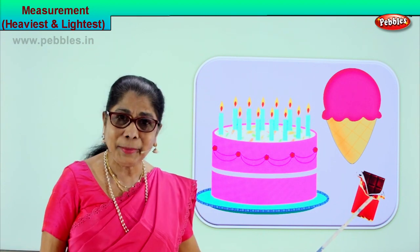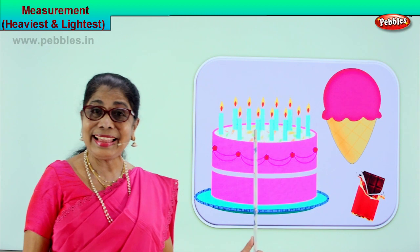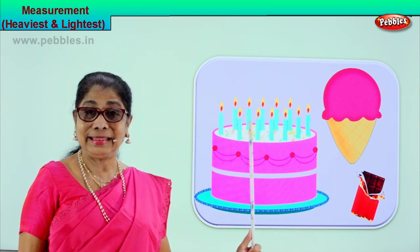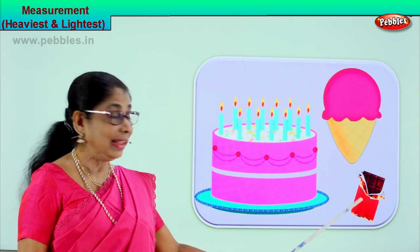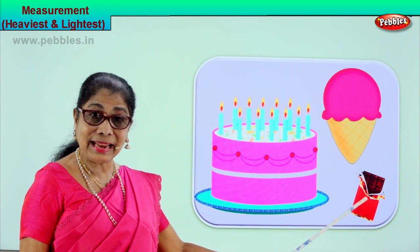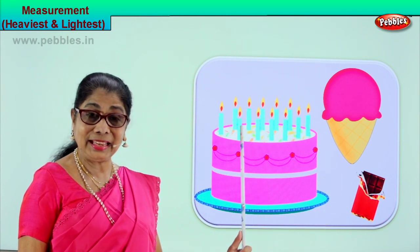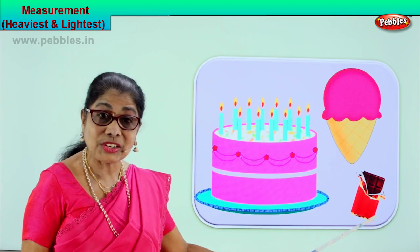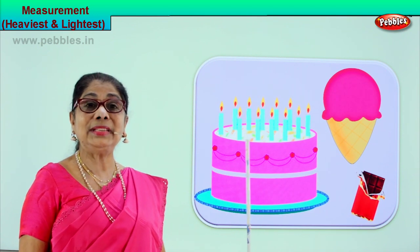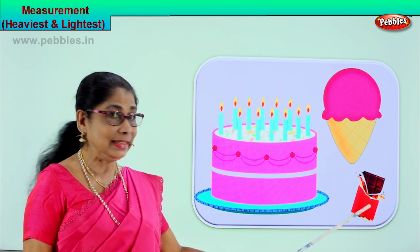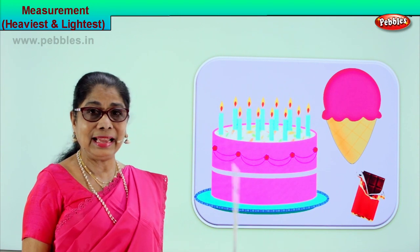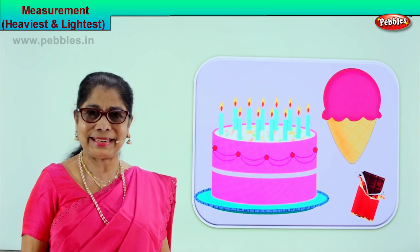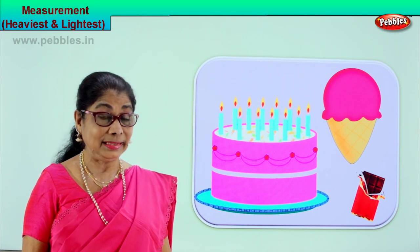So we are learning two measurements today: the lightest object and the heaviest object. This is light and this is heavy. So we say the lightest object and the heaviest. This is heavier, this is lighter among the three things.